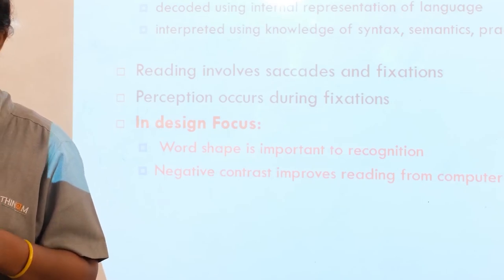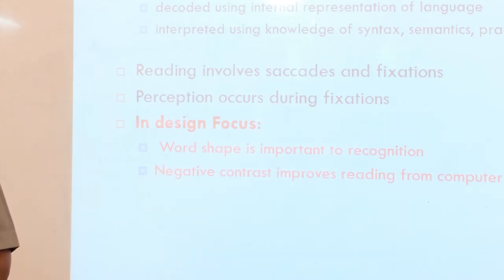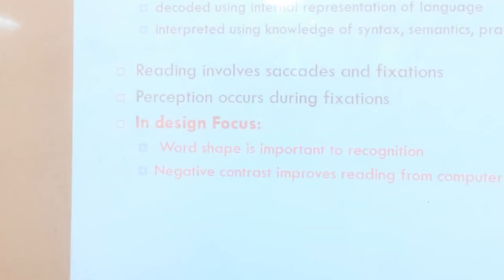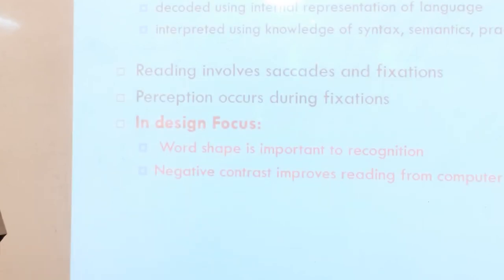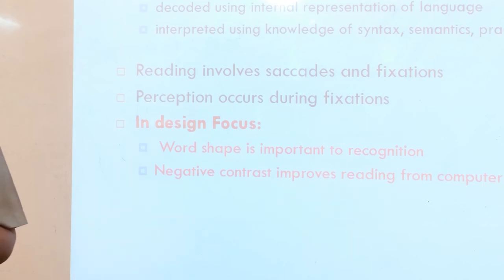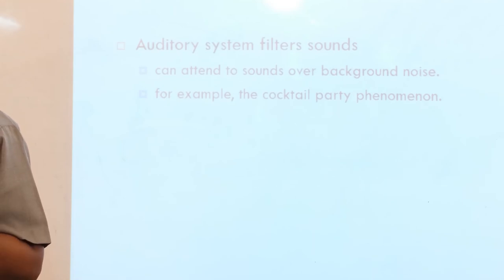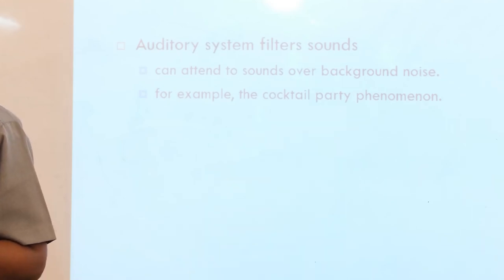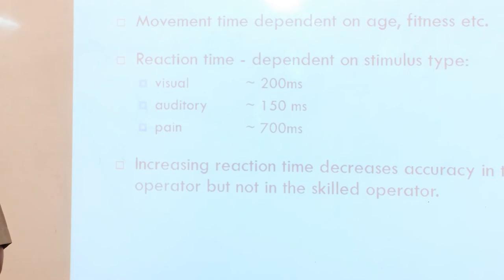Next is movement. Time taken for response to stimulus includes reaction time plus movement time. Movement time depends on age, fitness, etc. Reaction time depends on stimulus type: visual, auditory, or pain. Increasing reaction time decreases accuracy in unskilled operators but not in skilled operators.